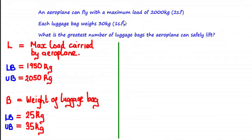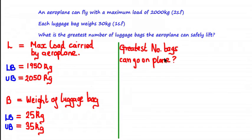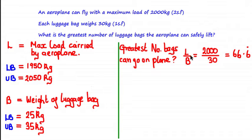If we made the assumption that the maximum load was exactly 2,000 and the weight of each bag was exactly 30, and you were asked for the greatest number of bags that can go on the plane, you'd simply do 2,000 divided by 30, which gives 66.6 recurring. Since you're finding the greatest number that can go on the plane, you wouldn't round up — you'd round it down to 66.